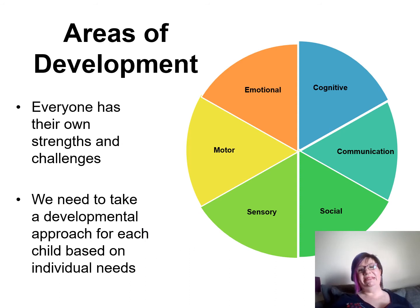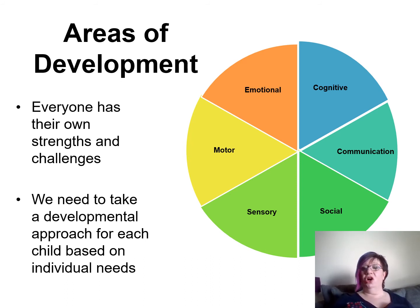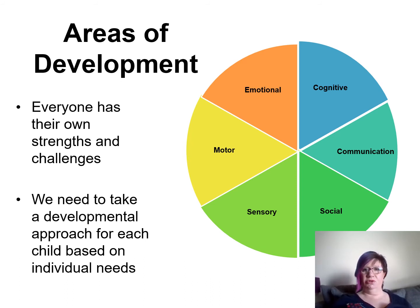So the six areas of development that we're going to focus on — you might hear us call them the pieces of pie, because that's how we've divided them up. They are: cognitive, communication, social, sensory, motor, and emotional. Each of the six films is presented by a different professional with a specialism in that area.